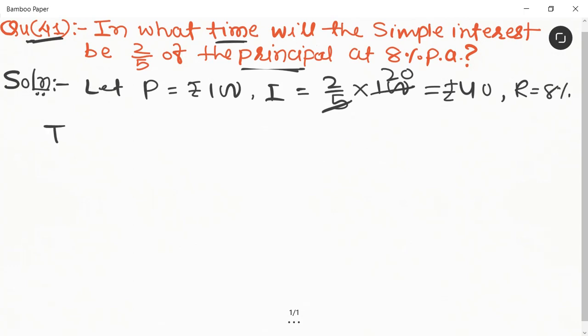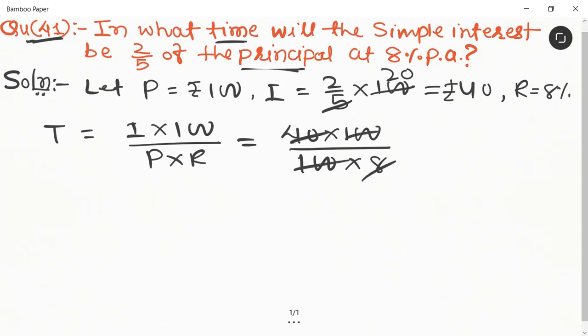We know that the formula of time is equal to I × 100 upon P × R. So it is equal to 40 × 100 upon 100 × 8. 100 cancels and 8 into 5, so 40 by 5 equals 5 years, which is the required answer.